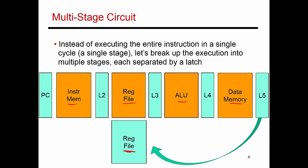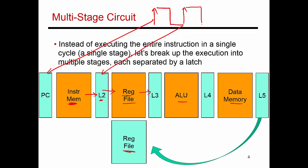I'm going to dedicate an entire cycle for each one of these steps. At the very first rising clock edge, this PC gets updated, and now I have an entire cycle in which to read something from the instruction memory unit. Whatever value is fetched gets written into latch L2 at the next rising clock edge. The contents of this latch serve as input to the next stage — that 32-bit instruction tells me what kind of instruction this is and what my register input operands are. Accordingly, those inputs go into the register file, and I'm giving an entire cycle to perform this register read. At the end of that cycle, the result gets latched into latch L3.